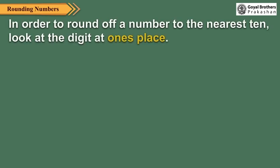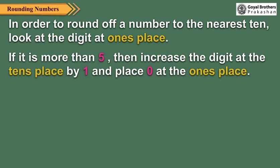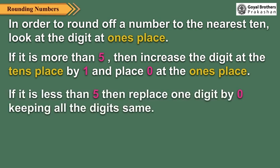In order to round off a number to the nearest ten, look at the digit at the one's place. If it is more than five, then increase the digit at the tens place by one and place zero at the one's place. If it is less than five, then replace the one's digit by zero, keeping all the other digits the same.